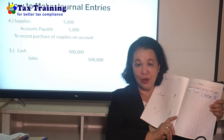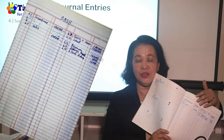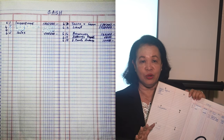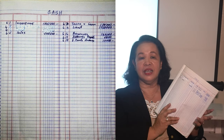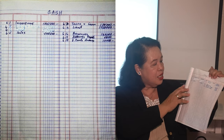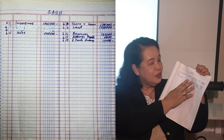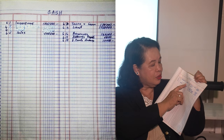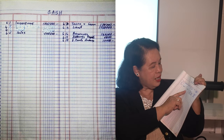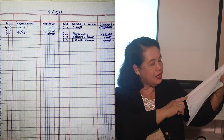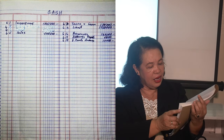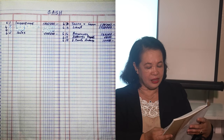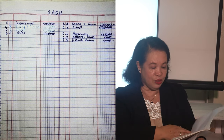Cash is the most active account of all, so it comes first. Why? Because almost all your transactions involve cash, and you can see from monitoring cash whether you are earning or not. Based on our recorded transactions: June 1, investment of 1,500,000 — we debited cash 1,500,000 because it is an asset account. Then sales of 500,000 is added. Then we deducted: taxes and licenses, land purchase of 1,000,000, expenses of 134,000, accounts payable payment of 5,000, and withdrawals of 10,000 — all deducted from cash.